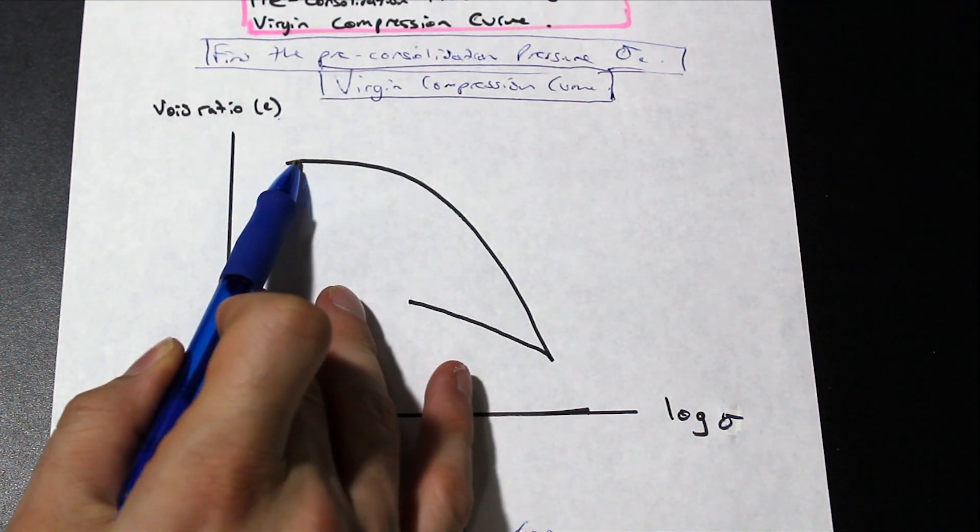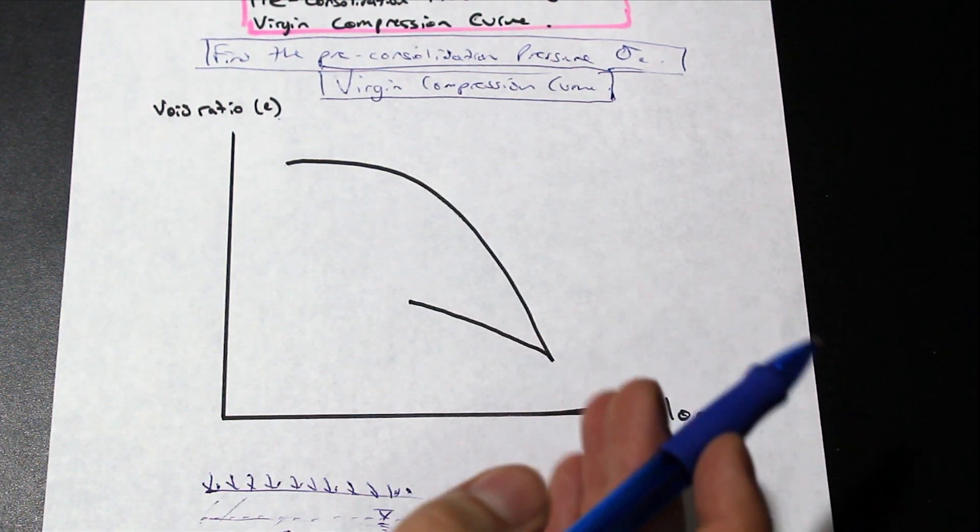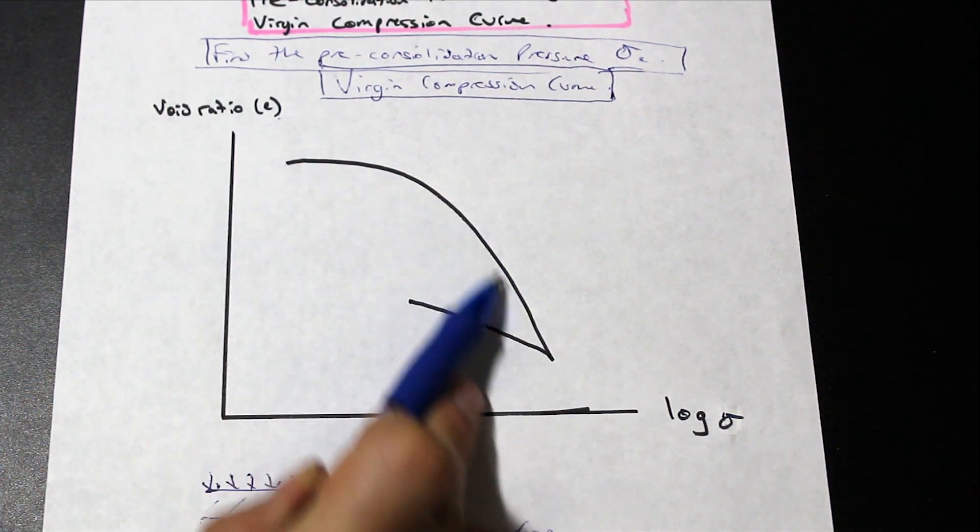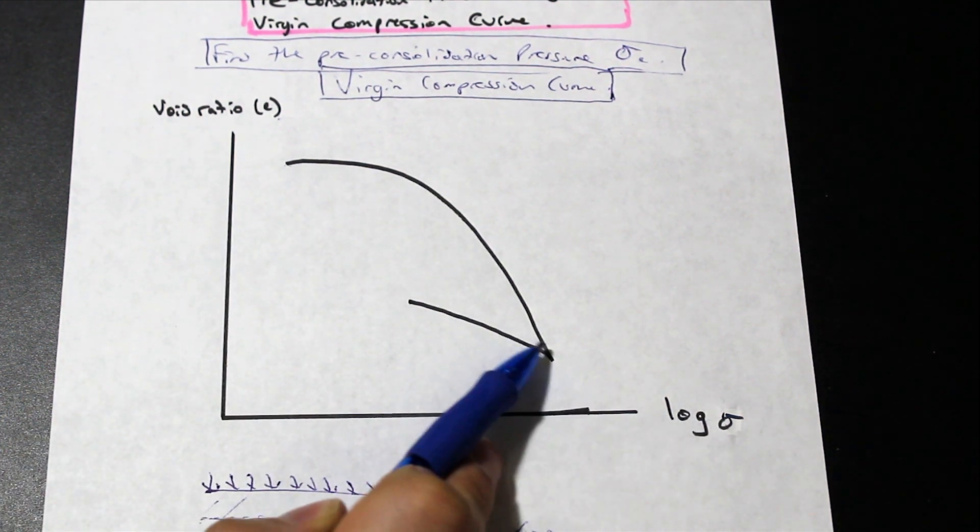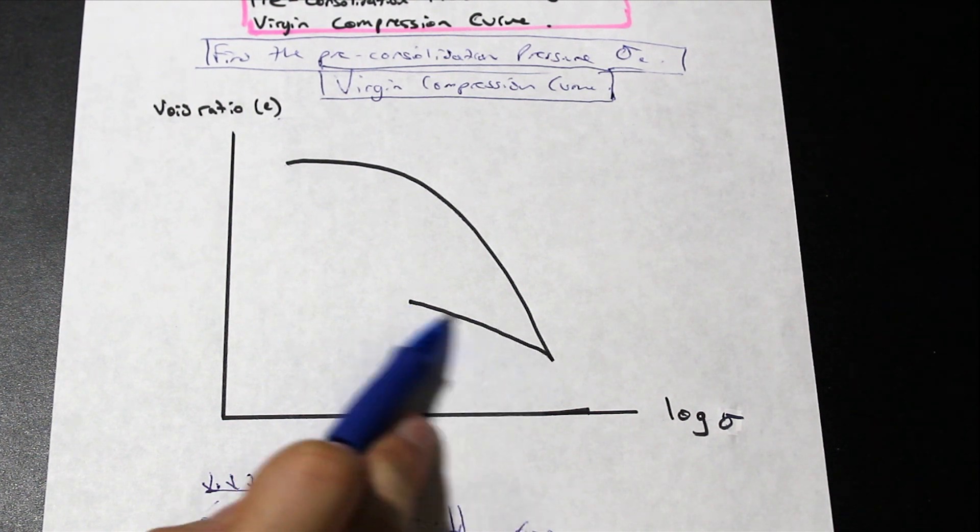So essentially what's happening here, as we're loading, and near the end of the loading, what's going to happen is, as we can see, the void ratio is decreasing. And as we get to the unloading phase, this is called the rebound curve,